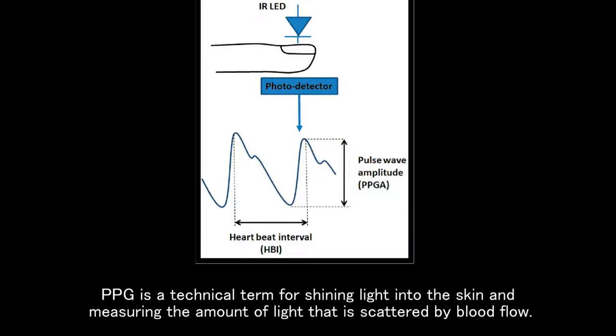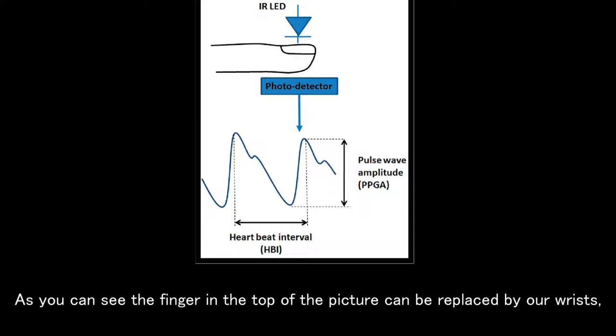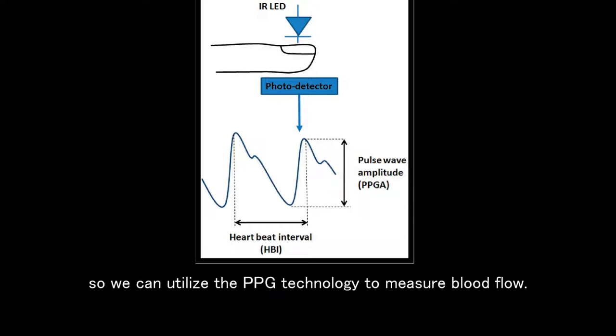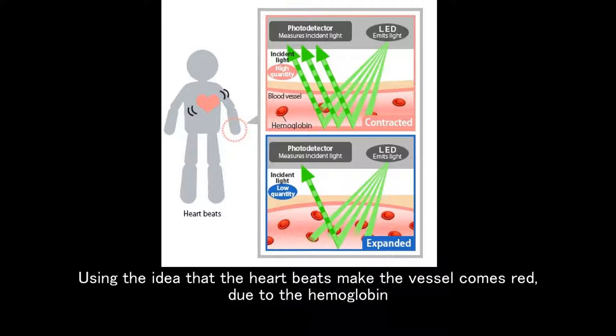light into the skin and measuring the amount of light that is scattered by blood flow. As you can see, the finger in the top of the picture can be replaced by our wrist, so we can utilize the PPG technology to measure blood flow using the idea that the heart makes the vessel turn red due to the hemoglobin.